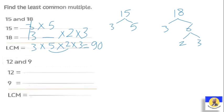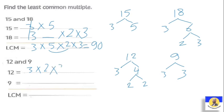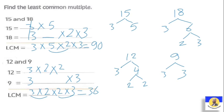Find the LCM of 12 and 9 by prime factorization. 12 = 3 × 4 = 3 × 2 × 2. 9 = 3 × 3. Write aligned: 3 × 2 × 2 and 3 × 3. From each column take one digit: 3 × 2 × 2 × 3. That is 3 × 2 = 6 and 3 × 2 = 6, so 6 × 6 = 36. The least common multiple is 36.